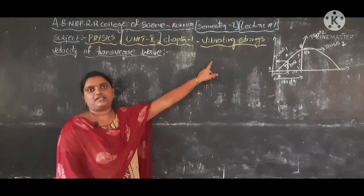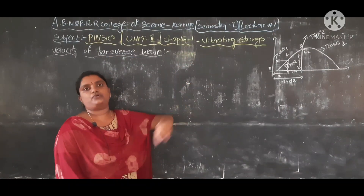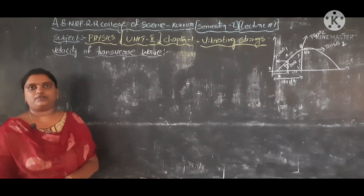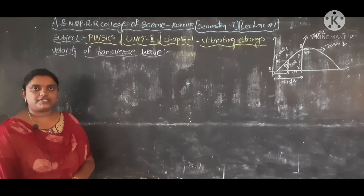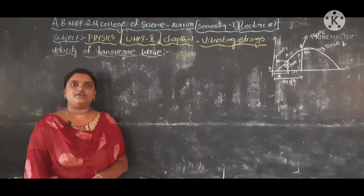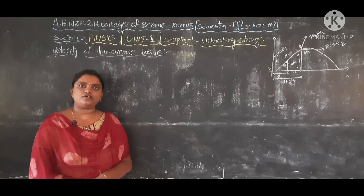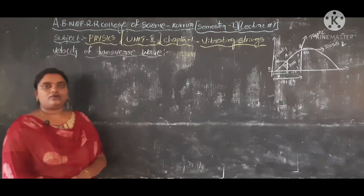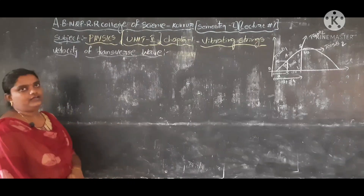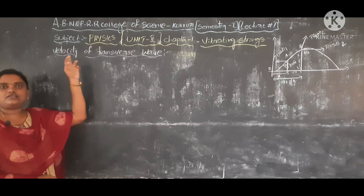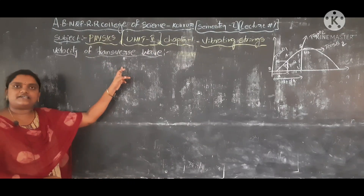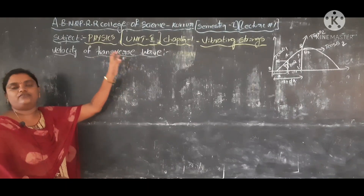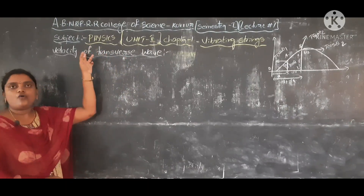Vibrating strings — strings will produce a vibration, and strings will produce a wave: a transverse wave. So today we find out the velocity of a transverse wave. Strings produce a transverse wave, and we will find its velocity.